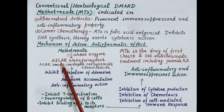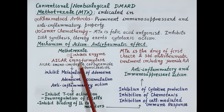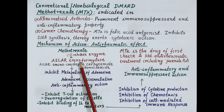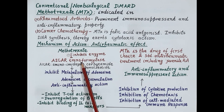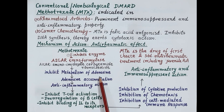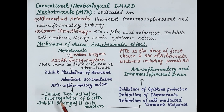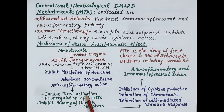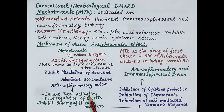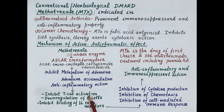Methotrexate inhibits the enzyme aminoimidazole carboxamide ribonucleotide transformylase, which is required for the metabolism of adenosine. Inhibition of this enzyme by methotrexate causes adenosine to accumulate, and this adenosine produces anti-inflammatory action by inhibiting T cell activation.